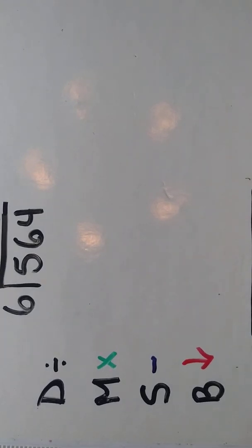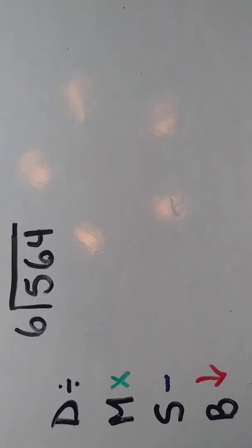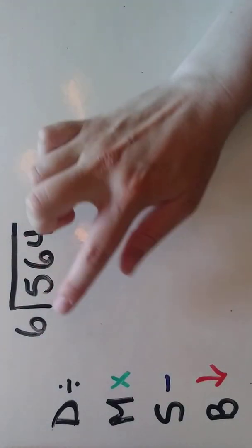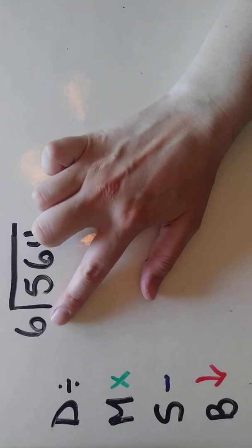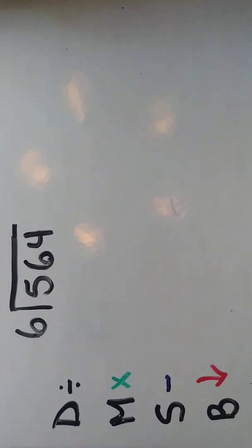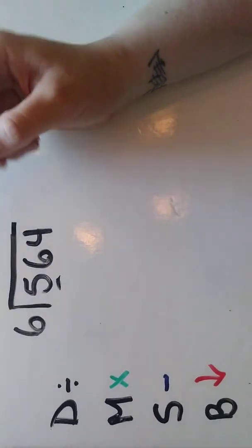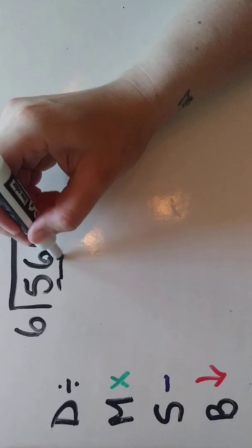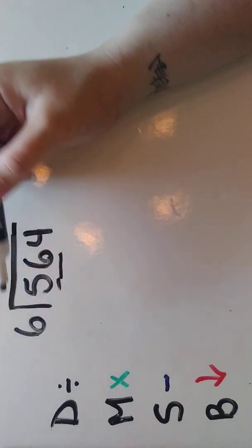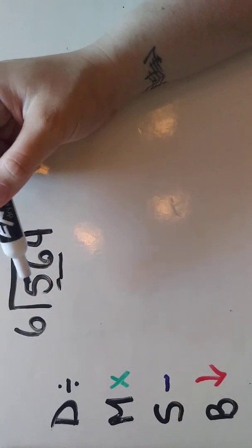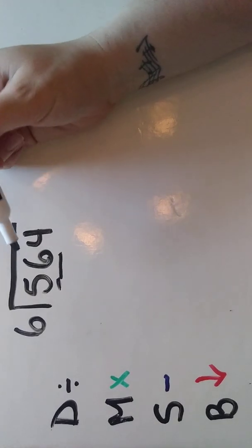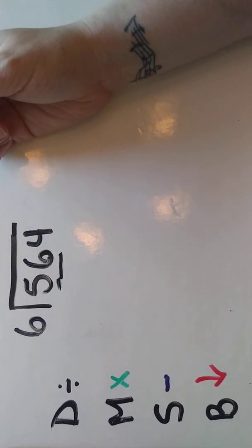Our example here is five hundred sixty-four divided by six. Our first step is division. We're going to see how many times does six go into five. Well, it can't go in any times, and when that happens I always have to look at the next number. How many times does six go into fifty-six, or six times something is going to give me a number that's close to fifty-six without going over.